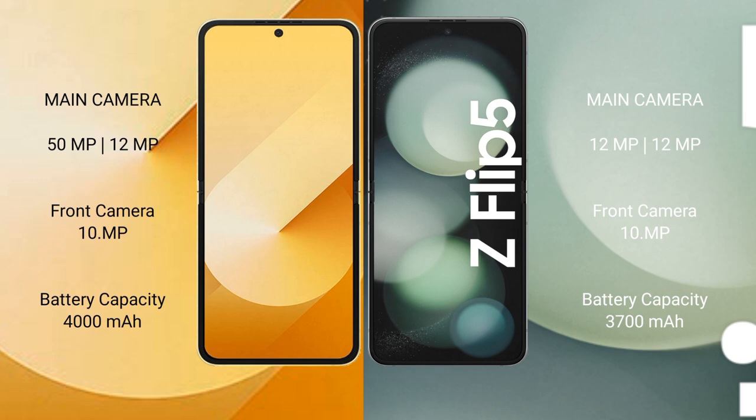The Samsung Galaxy Z Flip 6 has a rear dual camera setup of 50MP plus 12MP, and a front camera of 10MP. The Samsung Galaxy Z Flip 5 has a rear dual camera setup of 12MP plus 12MP, and a front camera of 10MP. The Samsung Galaxy Z Flip 6 has a 4000mAh battery with 25W fast charging support.